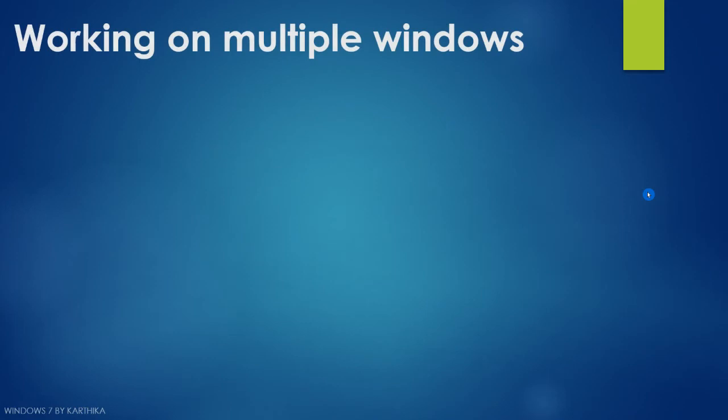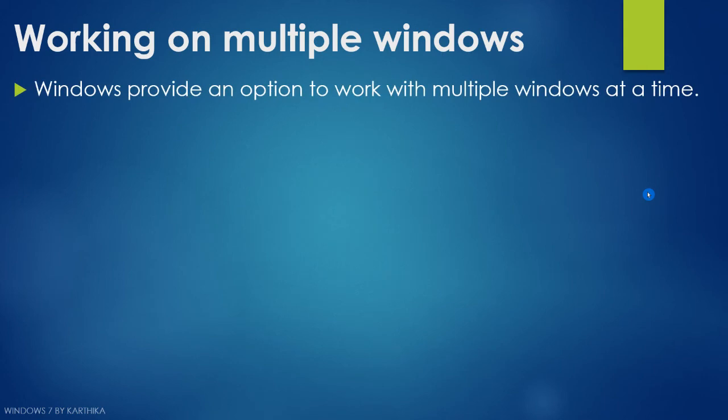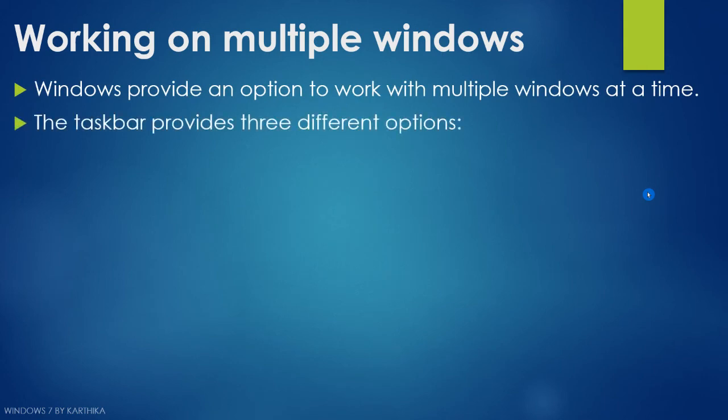Next, we are going to see how to work with multiple windows in Windows 7. We often use many windows on the screen at the same time. Windows provides an option to work with multiple windows at a time. The taskbar provides three options, accessible by right-clicking on the taskbar, which brings up a pop-up list.